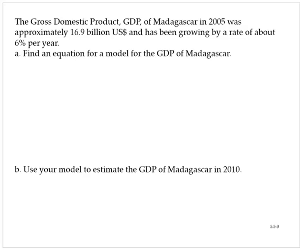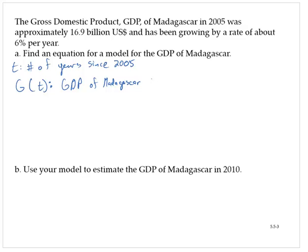Let's define variables. We'll let t represent the number of years since 2005, our initial value. And we will let g of t represent the GDP of Madagascar in billions of US dollars.